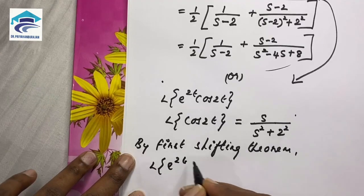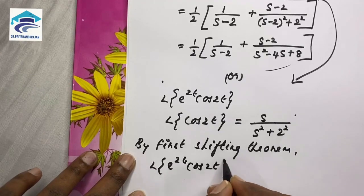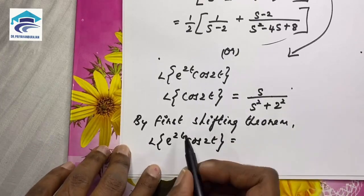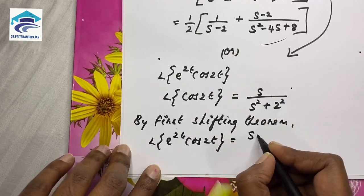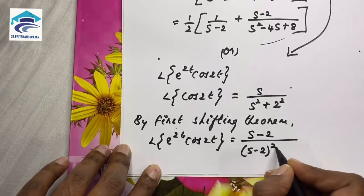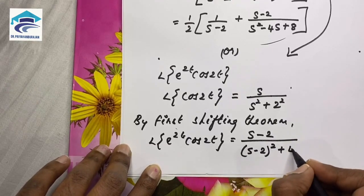This will become... if we shift s as s minus a, a here is 2, so it is s minus 2 by s minus 2 the whole squared plus 2 squared, plus 4.